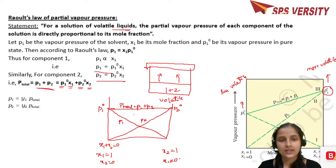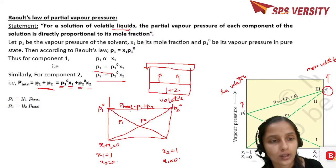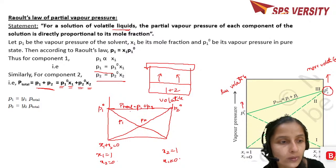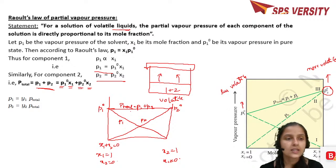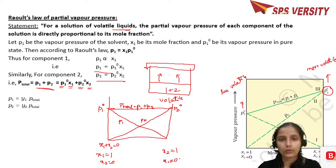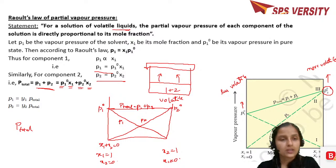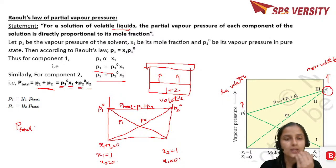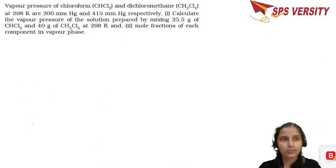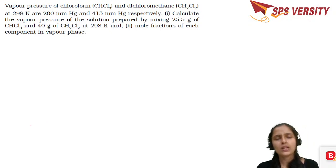The total vapor pressure of all components in a mixture equals the sum of partial pressures — just like Dalton's Law. y1 and y2 here are the mole fractions in the vapor phase. Using this, P total = P1 + P2 = P1°x1 + P2°x2. We will use this to solve some problems.